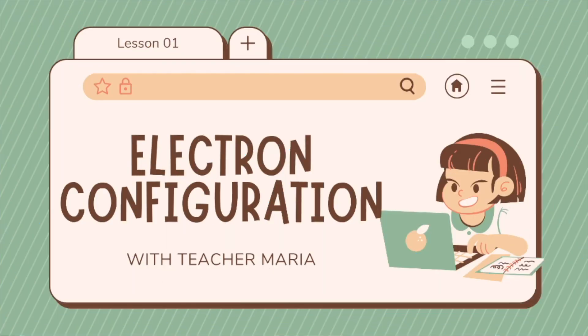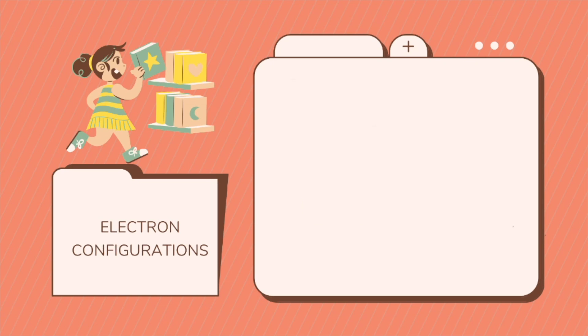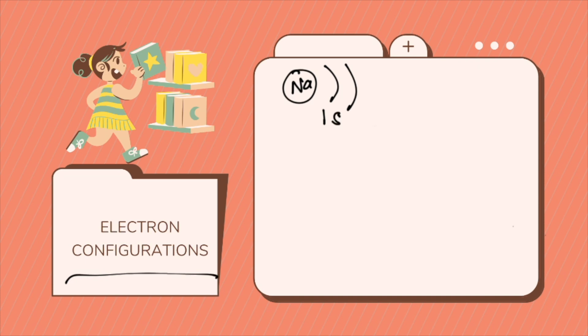What we have for today is about electron configuration. So what is electron configuration? When we say electron configuration, this is telling us in which orbitals the electrons for an element are located. So you have your nucleus — let's say sodium — and then you have your energy level (1, 2, 3, 4, and so on), your orbital position, and your sublevel: S, P, D, F. Electron configuration follows three rules.